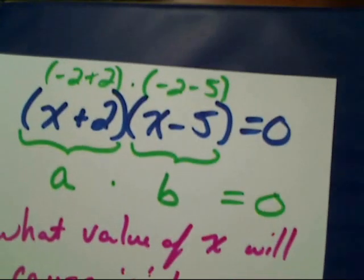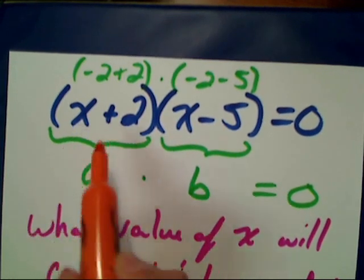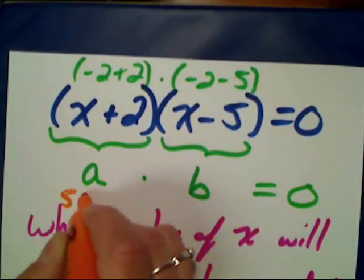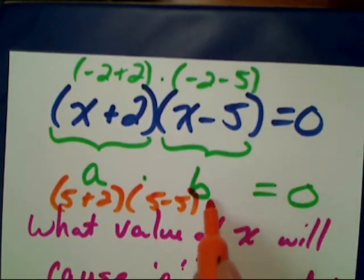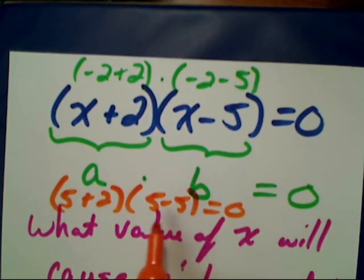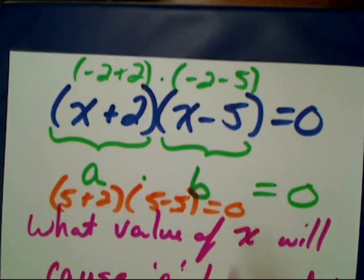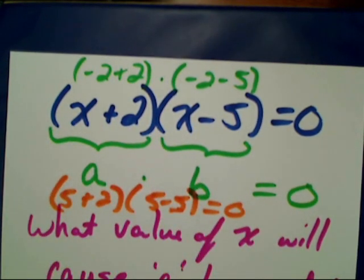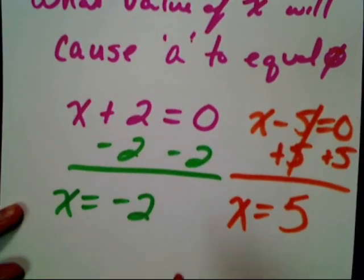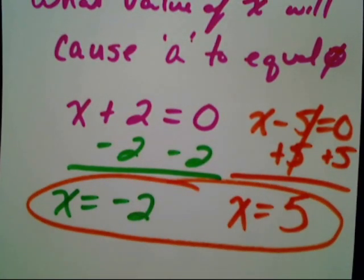Let's check that. If I have five plus two, that gives me seven times (five minus five). Five minus five is zero, so zero times anything gives me zero, which makes the left side equal to the right side — a true statement, which means it's a solution. So I have two solutions: X equals negative two, or X equals five. Those are the two solutions because our equation was already in factored form.